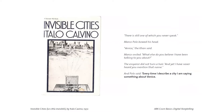So Calvino — or rather Marco Polo, who was from Venice — basically gave 55 different descriptions of the same city. When you read it, they seem very different, but they're actually different faces of the same city.